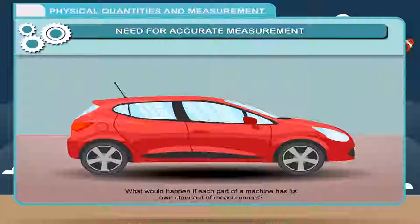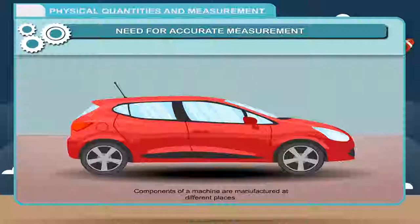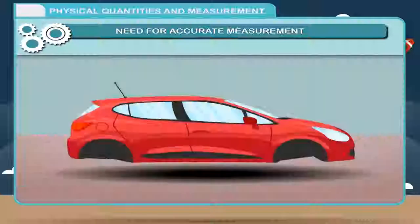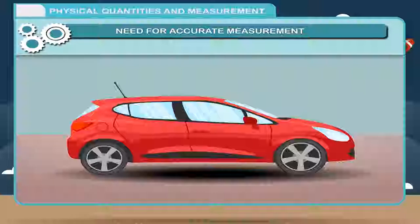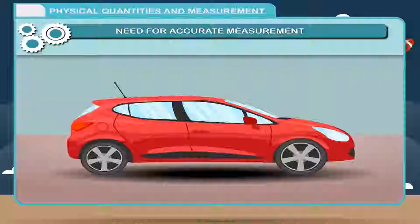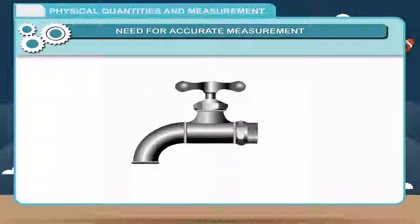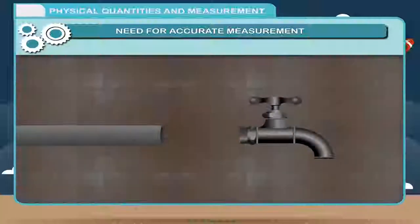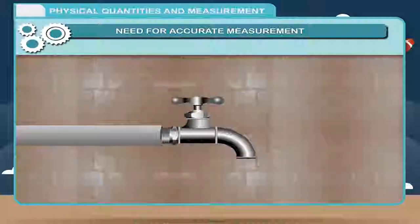What would happen if each part of a machine had its own standard of measurement? Components of a machine are manufactured at different places. If each component is different in measurement, there will be difficulty in assembling the machine. To remove all such difficulties, measurements are controlled very accurately. The water tap you bring from the market fits into any pipe of its measurement, which would not have been possible without control on the accuracy of measurements.